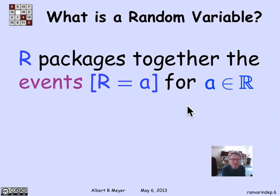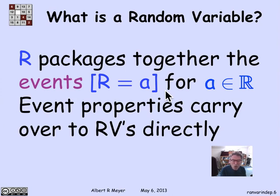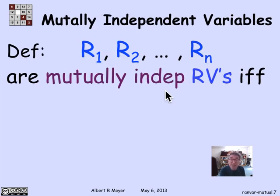Abstractly, what a random variable does is package together in one object r a whole bunch of events defined by the value that r takes. For every possible real number a, the event that r equals a is an interesting event. If you knew the answer to all of these 'r equals a' events, you'd know a lot about r. With this understanding, many event properties carry right over to random variables, including independence.